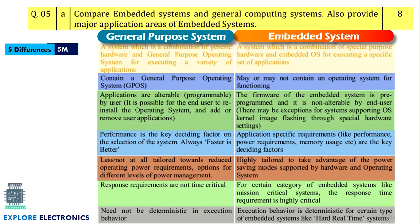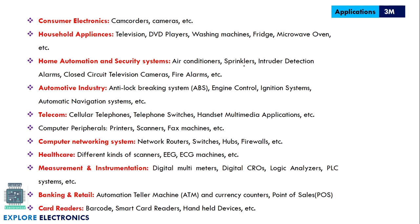The next question on module 3 asks us to compare embedded system and general purpose system and provide application areas of embedded systems. Since it is for eight marks, split as five marks for the difference and three marks for applications. Write at least five differences to get five marks. For applications, write the application areas and how the embedded system is used in each area — not just a list of devices like washing machine or air conditioner.